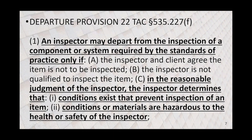An inspector may depart from the inspection of a component or system required by the standards of practice only if: the client agrees the item doesn't have to be inspected; the inspector is not qualified to inspect the item; or in the reasonable judgment of the inspector, conditions exist that prevent inspection of an item. Conditions or materials may also be hazardous to the health or safety of the inspector. Think in terms of what reasons we might have — weather, wet roofs, rain, snow — conditions that prevent inspection of an item.